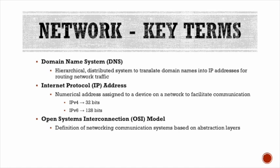Here are some network key terms you should be familiar with. DNS is a hierarchical distributed system to translate domain names into IP addresses for routing network traffic. An Internet Protocol address is a numerical address assigned to a device on a network to facilitate communication — without an IP address, a device cannot connect to a network including the Internet. IPv4 is 32 bits; IPv6 is 128 bits. The OSI model describes how hosts communicate with each other across a network based on seven abstraction layers.